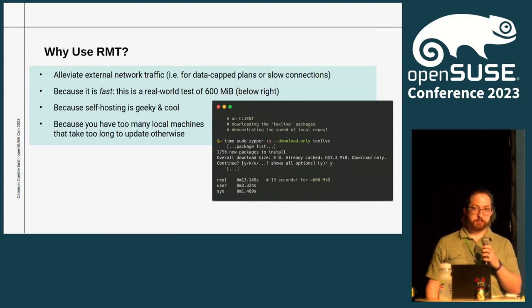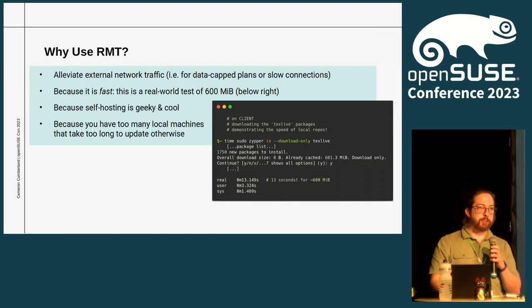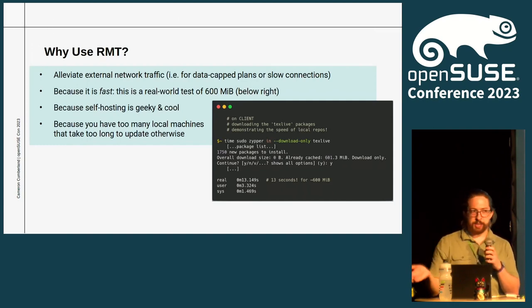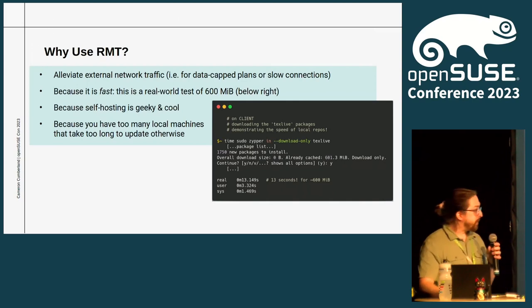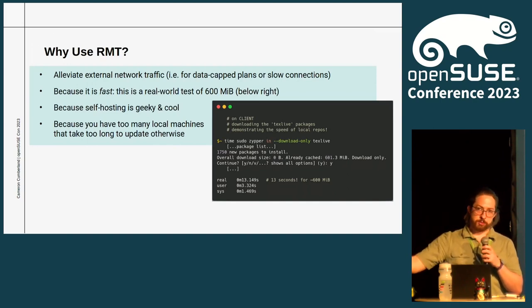Because self-hosting is geeky and cool — we're here voluntarily, I think we're all okay with being called geeks. Also, because you have too many local machines that take too long to update otherwise. One of the things with Tumbleweed is the frequency of updates: every other day, every three days, you're pulling down several gigabytes a week across multiple machines. The other benefit of RMT is you can host it behind a firewall. If you have an air-gap system, you can connect it to RMT, connect RMT to the internet repos, and then pull only from that local RMT server to your machine.